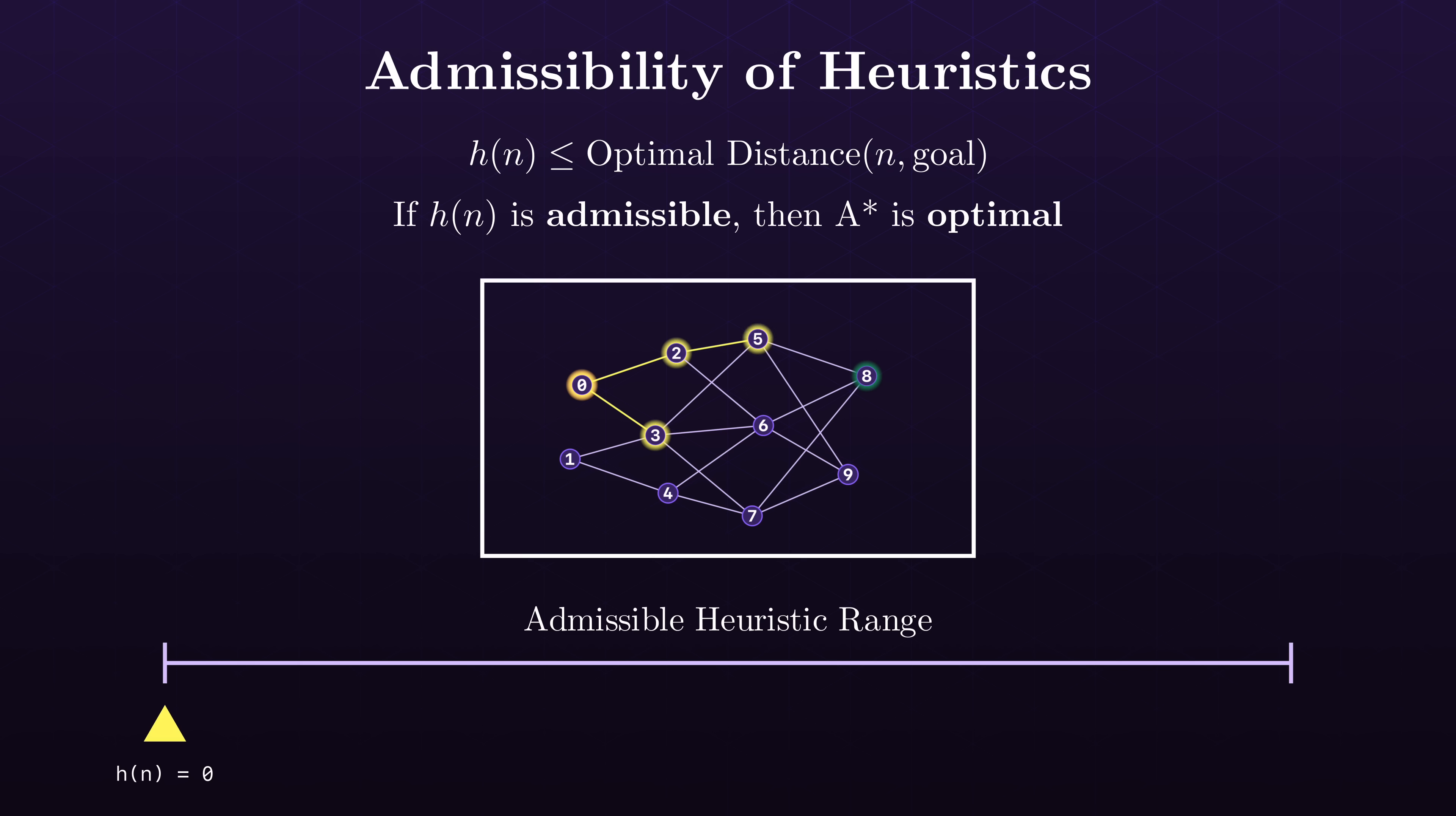On the opposite side of the spectrum, the best admissible heuristic possible is just the actual optimal path between the two nodes. But that's impractical because if we knew the optimal path between all the nodes, what are we even doing solving this problem? It's important that heuristics are relatively easy to compute. Finding the balance between these two extremes is the real art of implementing these algorithms in practice.